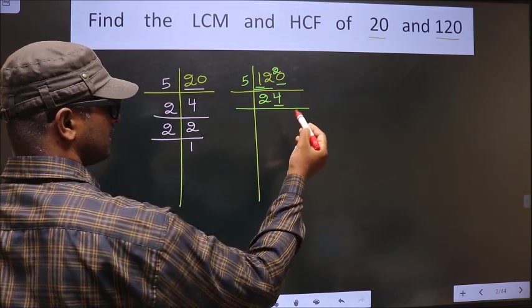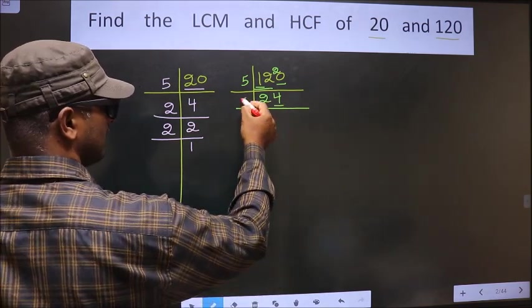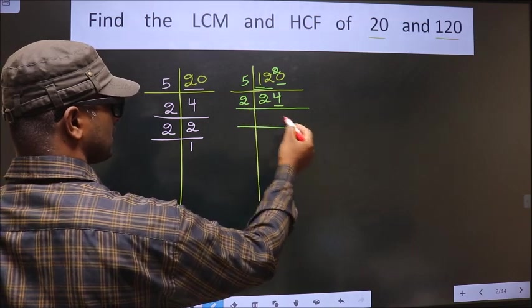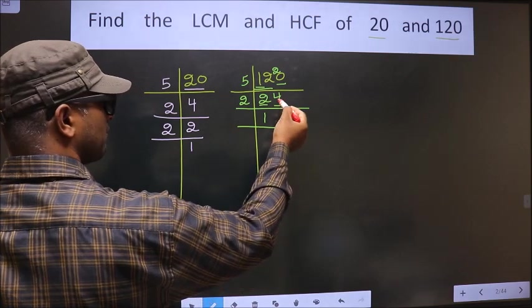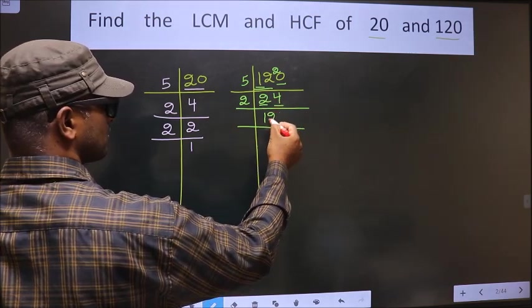Now for this number last digit is 4, even, so we take 2 here. First number is 2. When do we get 2 in the 2 table? 2 times 1 is 2. Next number is 4. When do we get 4 in the 2 table? 2 times 2 is 4.